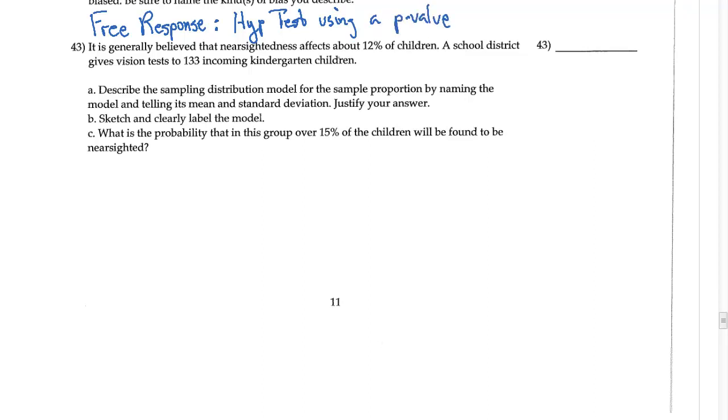This is going to bring in our calculator and allow us to do some different things. It's generally believed that nearsightedness affects about 12% of children, so 12% of children is going to be really important because this is going to make my p equal to 12%, and my children is going to be the population.